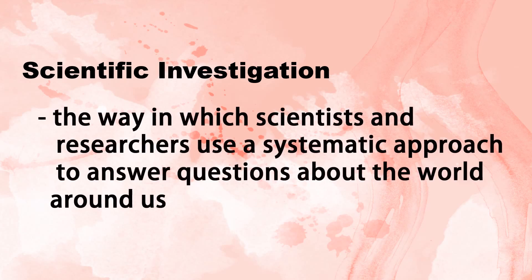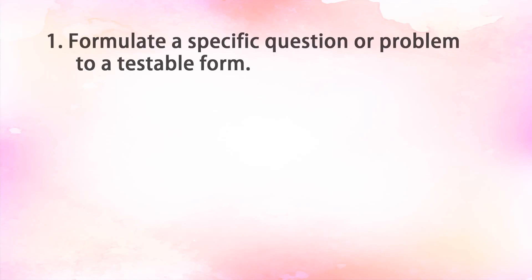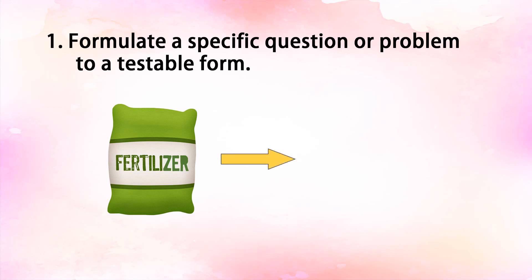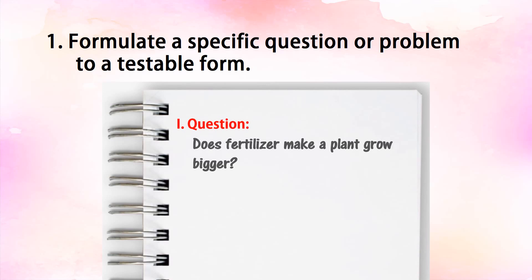Scientific investigation is the way in which scientists and researchers use a systematic approach to answer questions about the world around us. The number one component of a scientific investigation is to formulate a specific question or problem in a testable form. For example, if you want to know the effects of fertilizer on the growth of a plant, your possible problem question is: does fertilizer make a plant grow bigger?